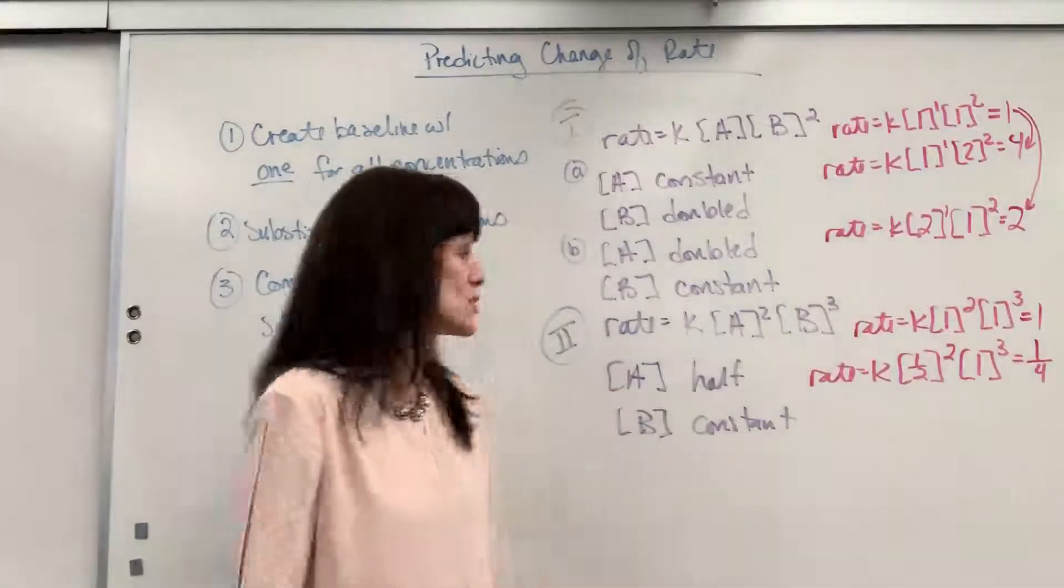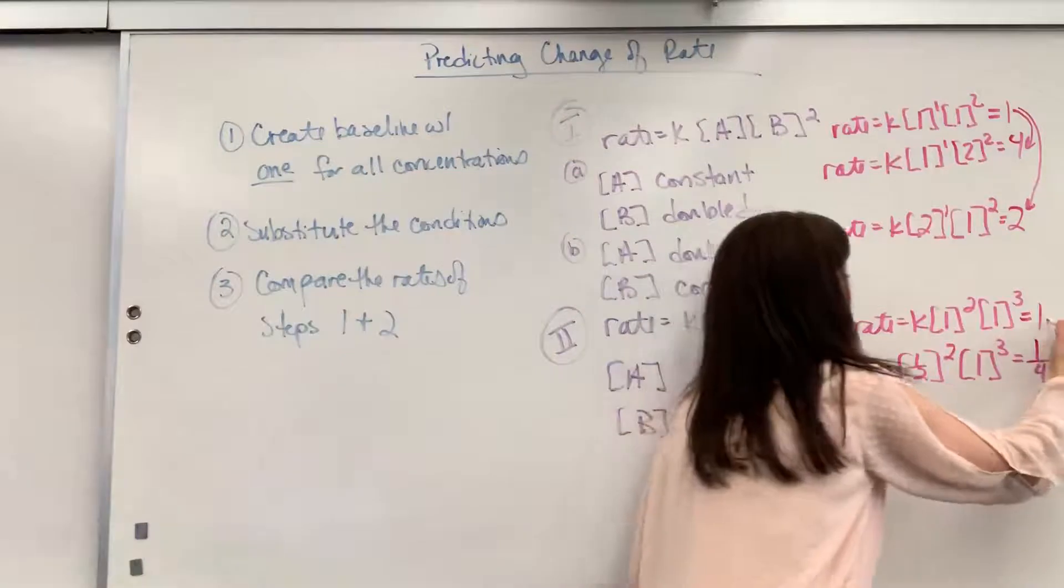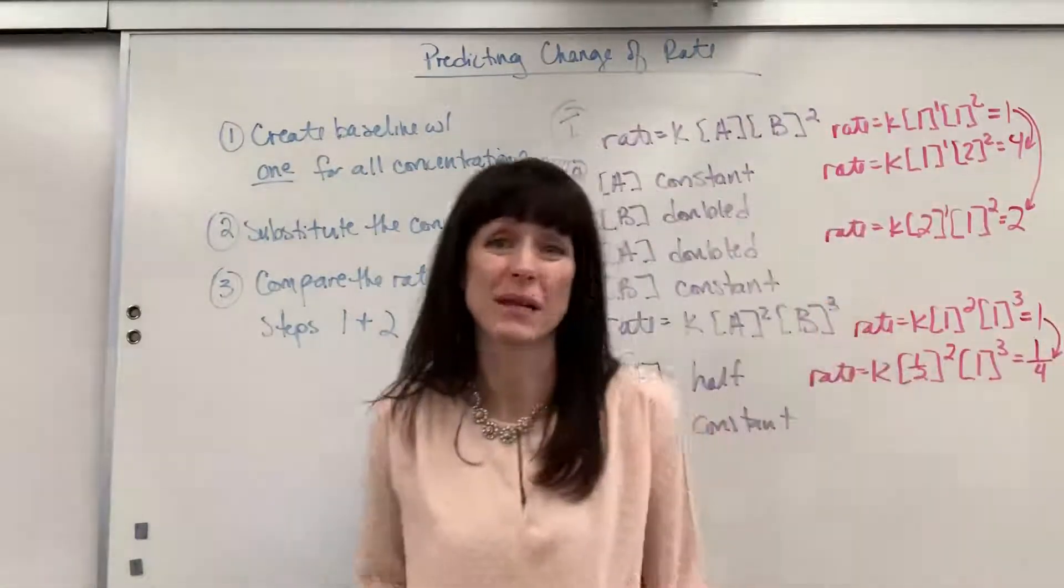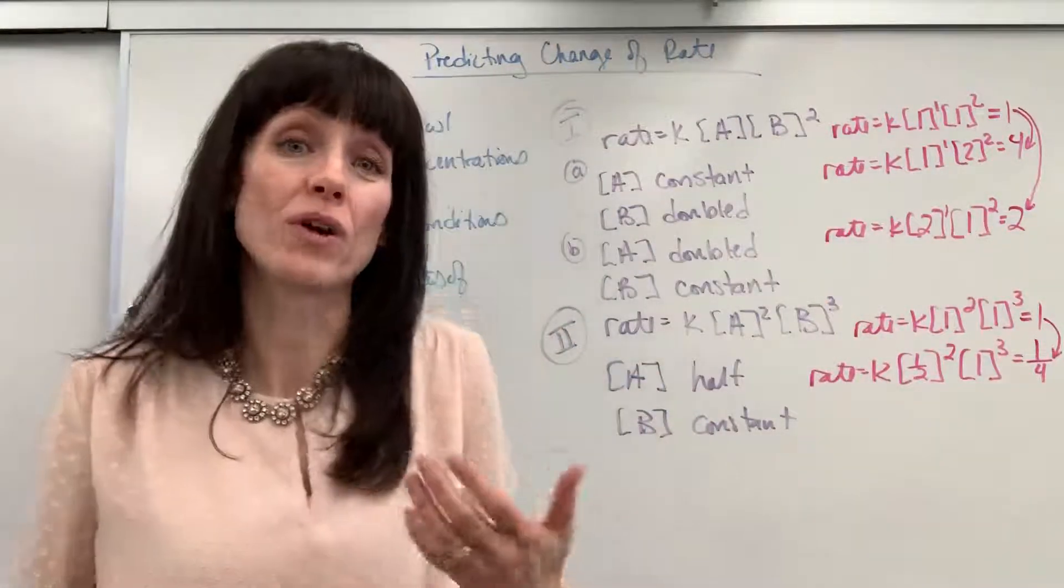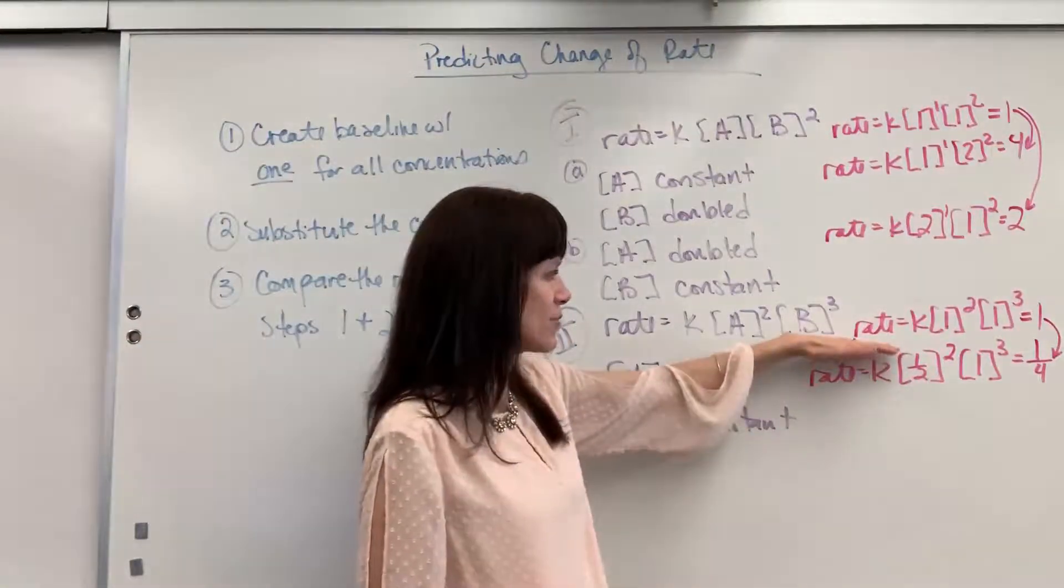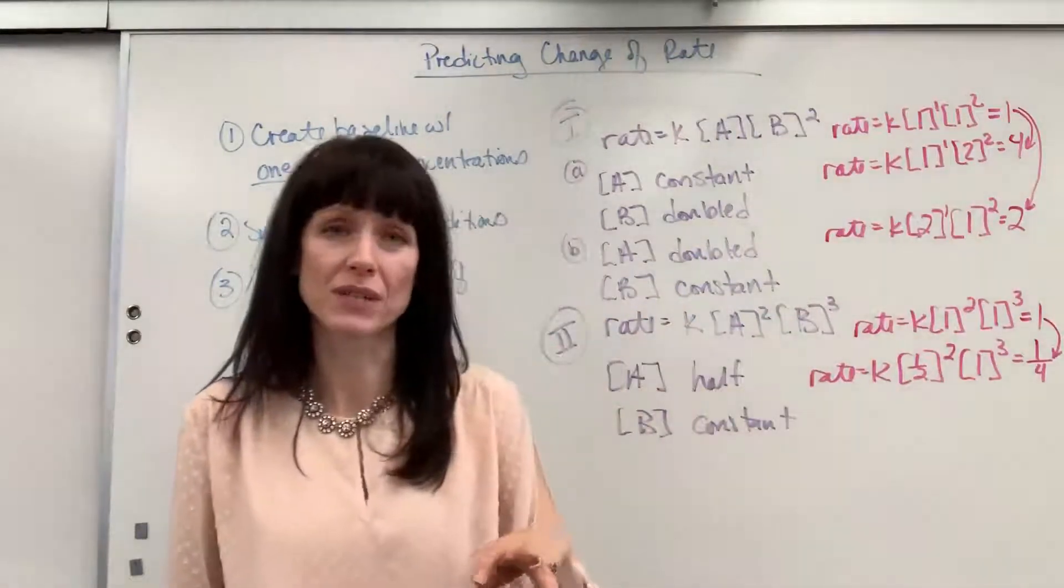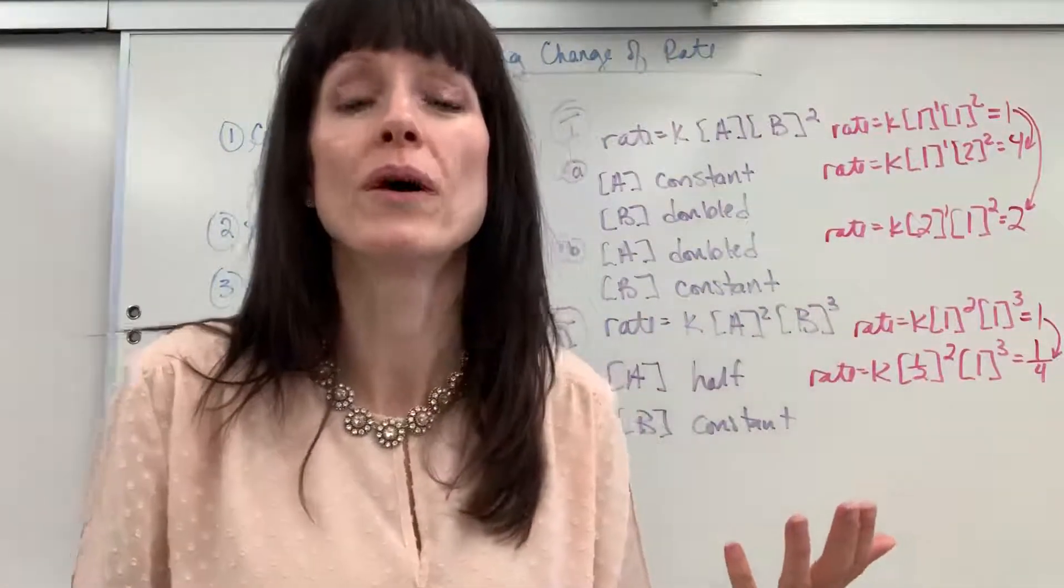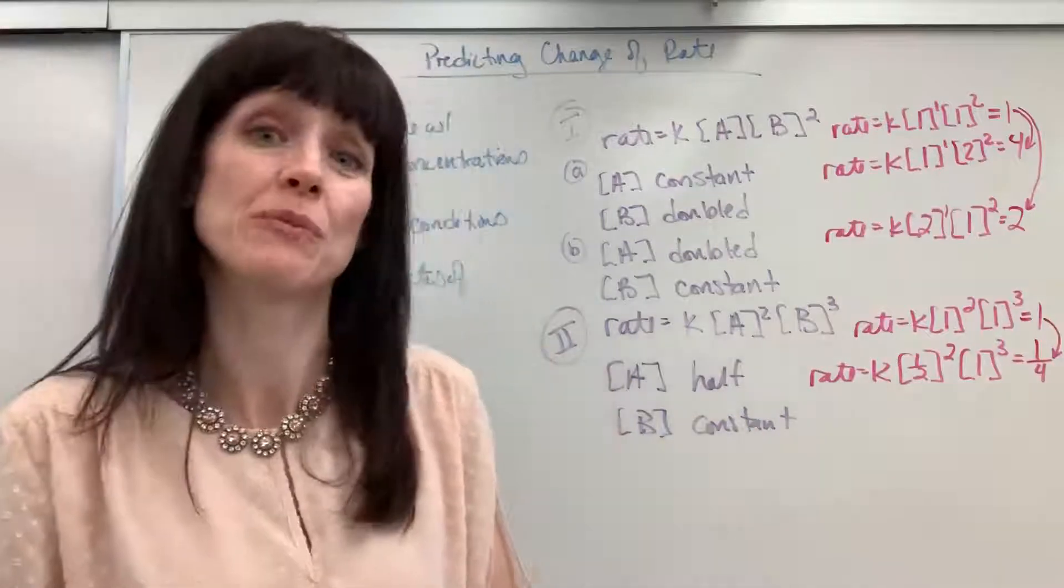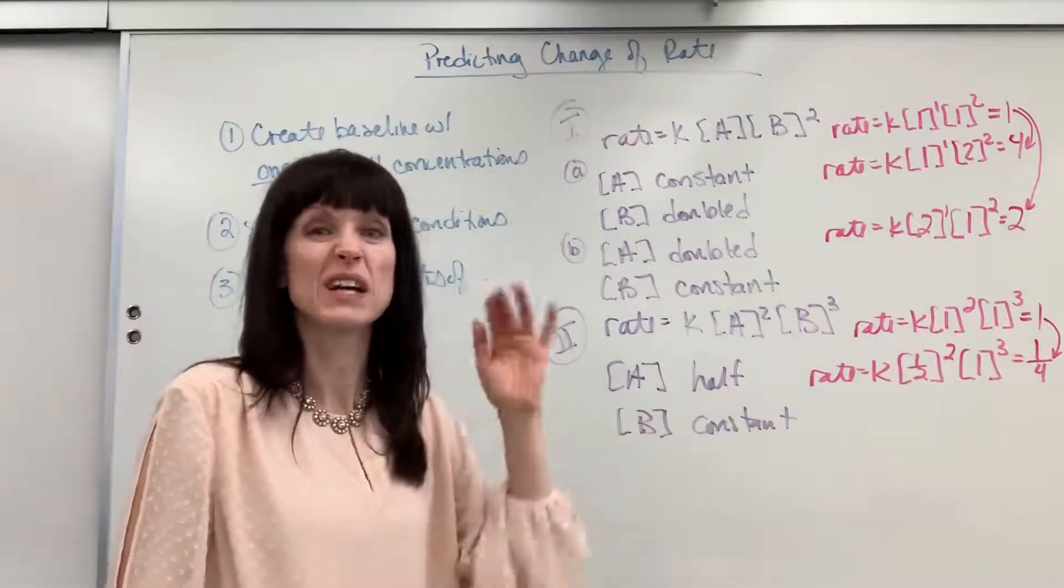Wow. So by halving the concentration of A, this is going to go 4 times slower. It's going to go 1 fourth the rate. So again, if that was 0.5, and if I half A in this situation, it's going to go 4 times slower. What's that going to be? It's going to go 0.125 molar per second instead of 0.5. You just multiply that rate by 1 fourth. It goes 4 times slower.